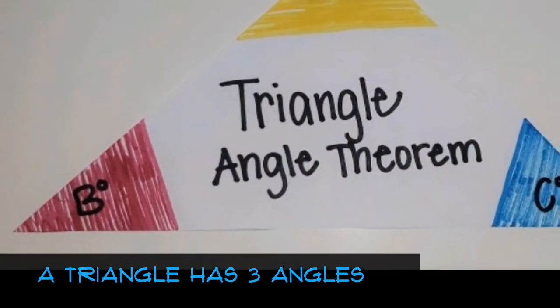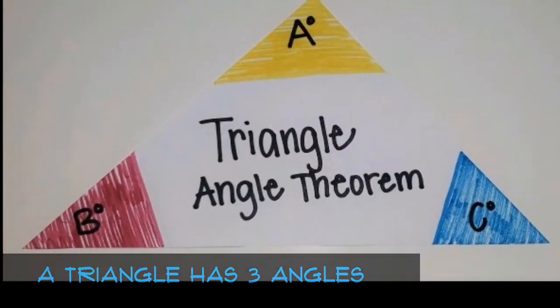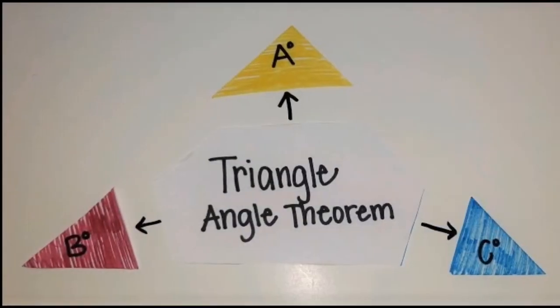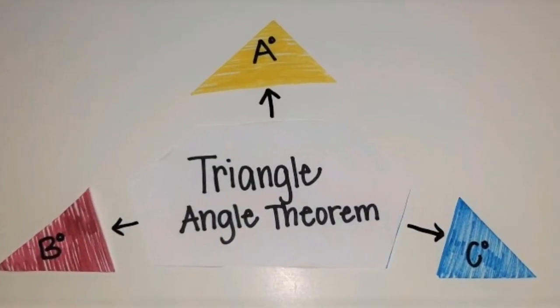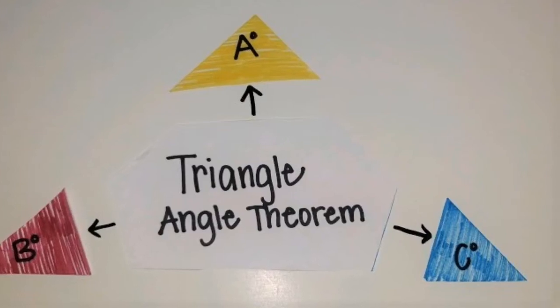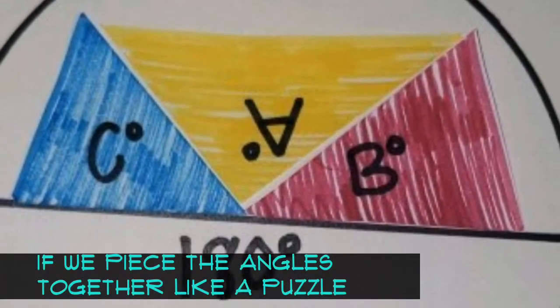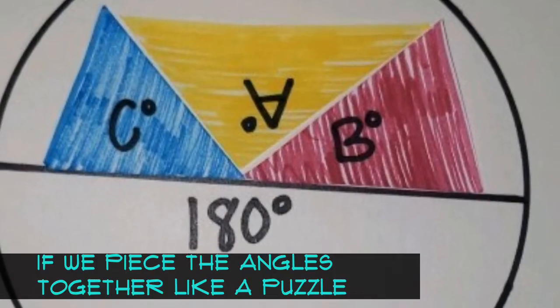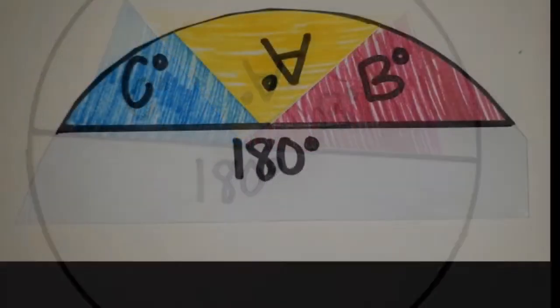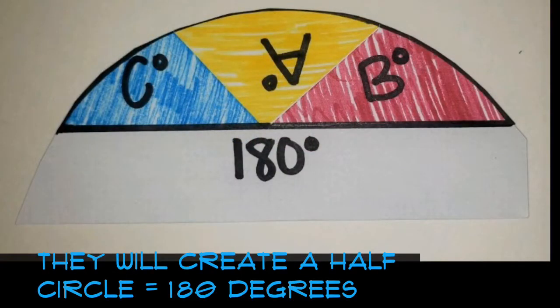The Triangle Angle Theorem is talking about the makeup of the three angles that make up a triangle. If I detach those three angles from the triangle, if I move them around and piece them together, they actually fit perfectly on this straight line and create the 180 degrees half circle.